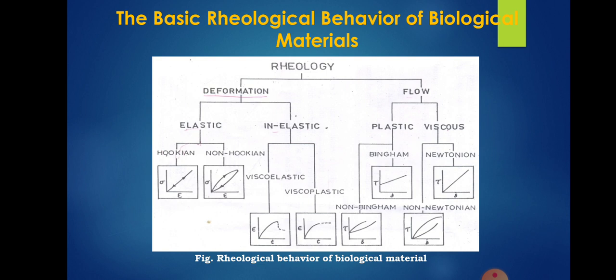The basic rheological behavior of biological material is shown in this particular figure. Rheology is nothing but the deformation and flow. Deformation can be elastic and inelastic, and flow is plastic and viscous flow. Elastic behavior is represented by hookean body and non-hookean body. In hookean body, the ratio of stress to strain is straight line. The graph follows straight path. While the cycle of loading and unloading is not linear in non-hookean bodies. In elastic deformation, it is categorized into viscoelastic and viscoplastic. The behavior of the substance under the applied load is shown by the graphs.